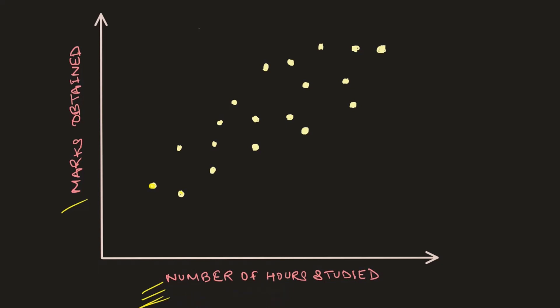When we want to use a linear regression algorithm, what we actually want to do is use the machine learning algorithm to draw a best fit straight line that goes through most of the observations in such a way that the loss is as small as possible.